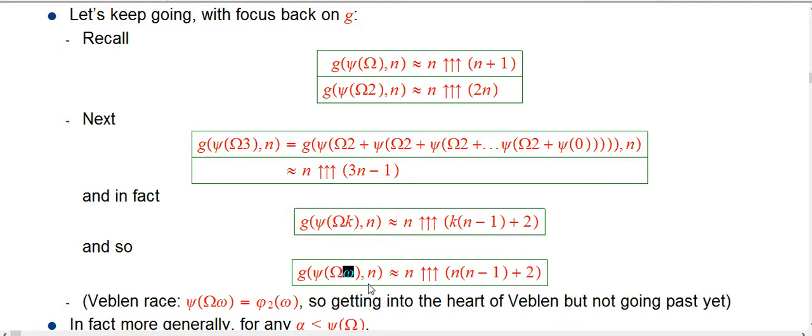So limit ordinals are the easy part. The successors, well, the interesting ones are the ones that don't have fundamental sequences. But limit ordinals of countable cofinality are pretty easy. And so we just put in an n, which is our usual diagonalization. This is a signal for very straightforward diagonalization. So this is about n triple up n squared. That's pretty decent.